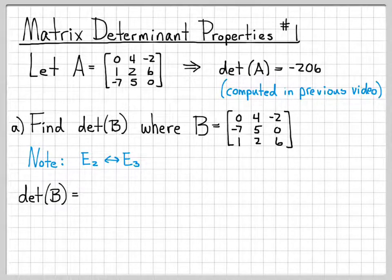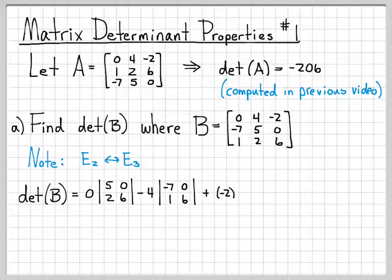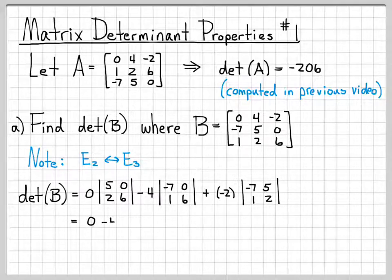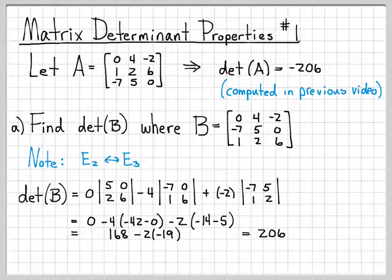For now, we're going to go ahead and compute the determinant of B just using the definition. I'll do cofactor expansion about the first row. So I'm going to have 0 times this submatrix determinant, minus 4 times this submatrix, plus negative 2 times the corresponding cofactor. That gives me 0 minus 4 times negative 42 minus 0, plus negative 2 times negative 14 minus 5. 4 times 42 is 168.